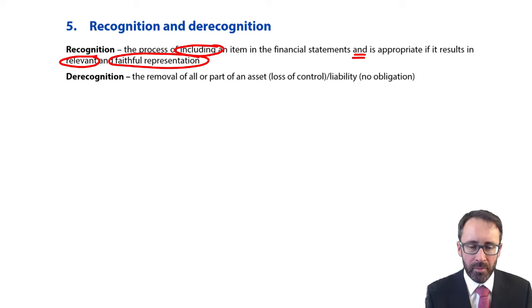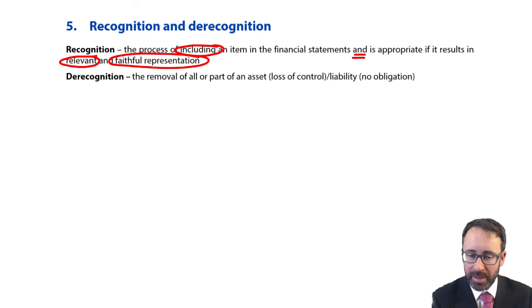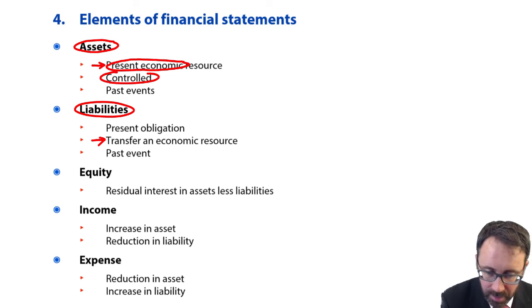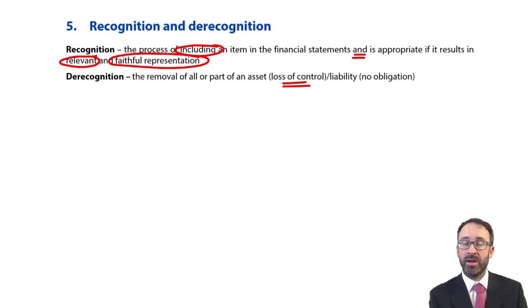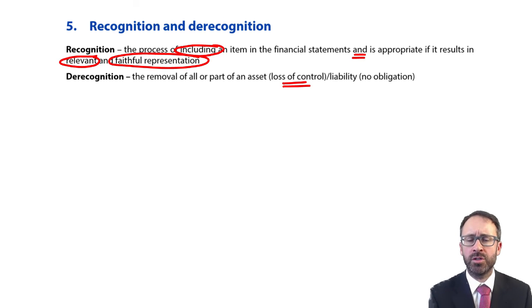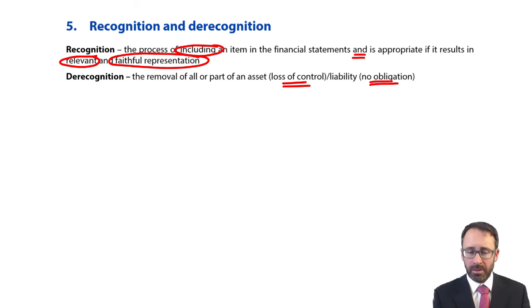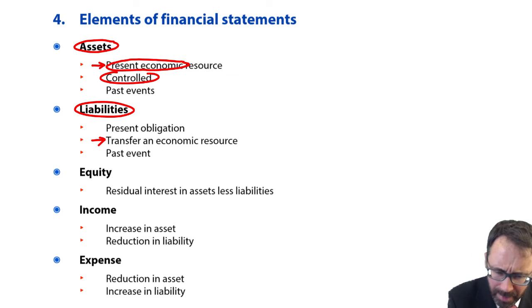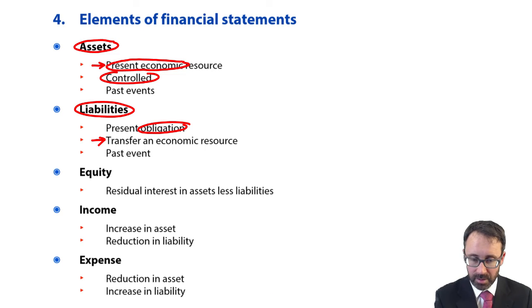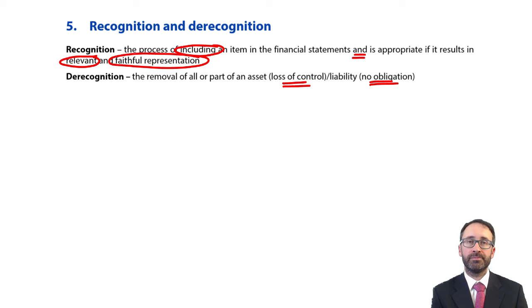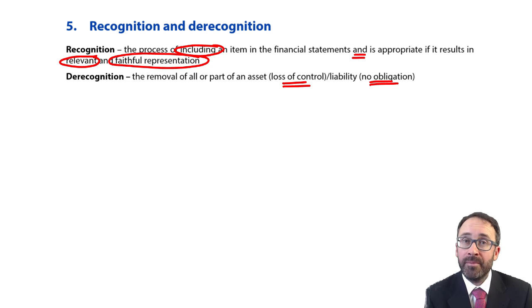De-recognition: you remove it basically when there's been a loss of control, which ties back to the definition of an asset — one of the definitions is that we had control. So if you no longer have control, de-recognise the asset. If you've sold your item of PPE, it's gone — you don't control it anymore because you've sold it to somebody else. And with your liability, you de-recognise it when there's no obligation. If you've paid off the liability, there is no obligation anymore because you no longer owe anybody the money. So, de-recognise the liability. There are the definitions, and that was the application.